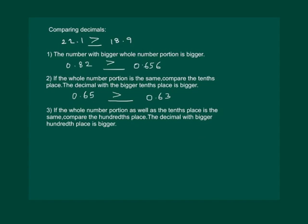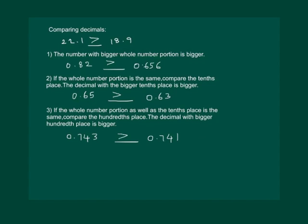Similarly we can continue. Look at the numbers 0.743 and 0.741. The whole number places are the same, the tenths places are the same, and the hundredths place is also the same. Then the thousandths place is compared. The decimal with the bigger thousandths place will be bigger, and hence 0.743 is greater than 0.741.